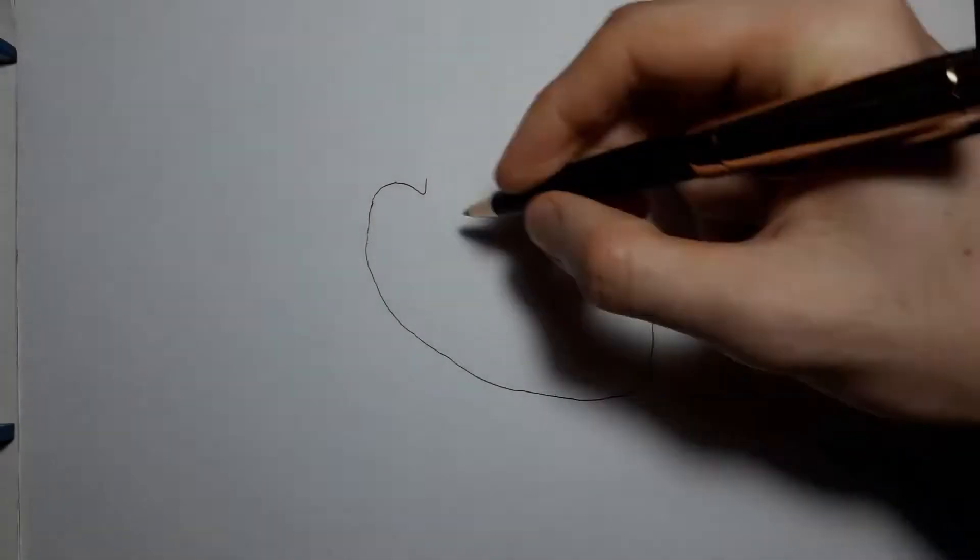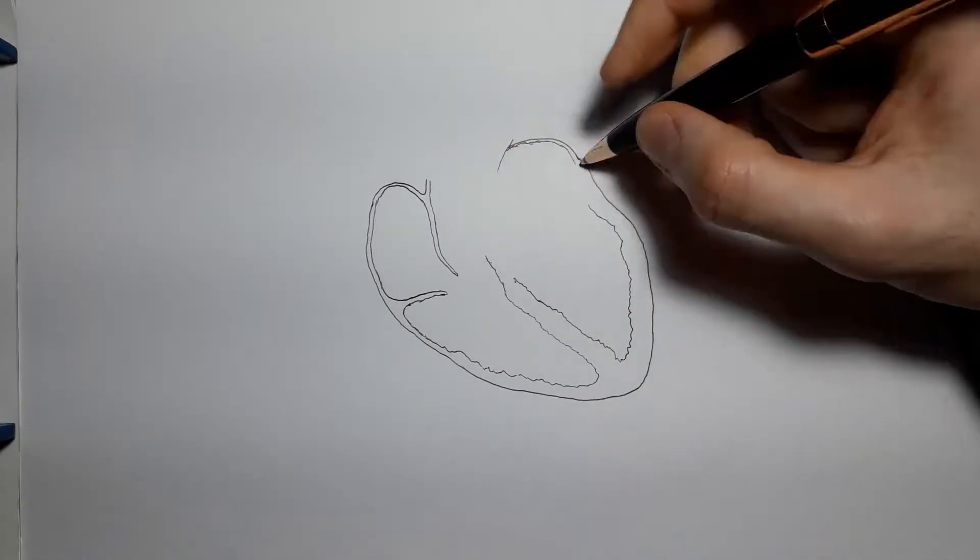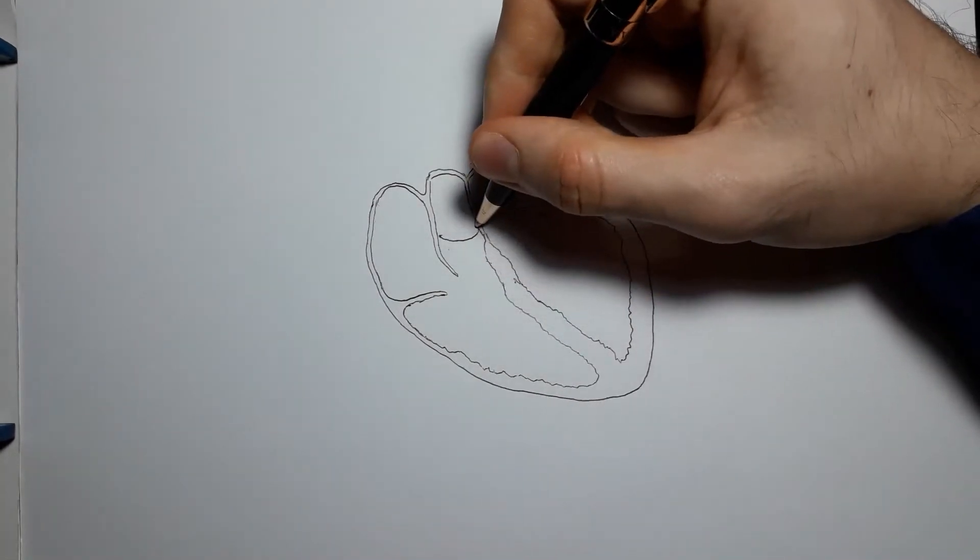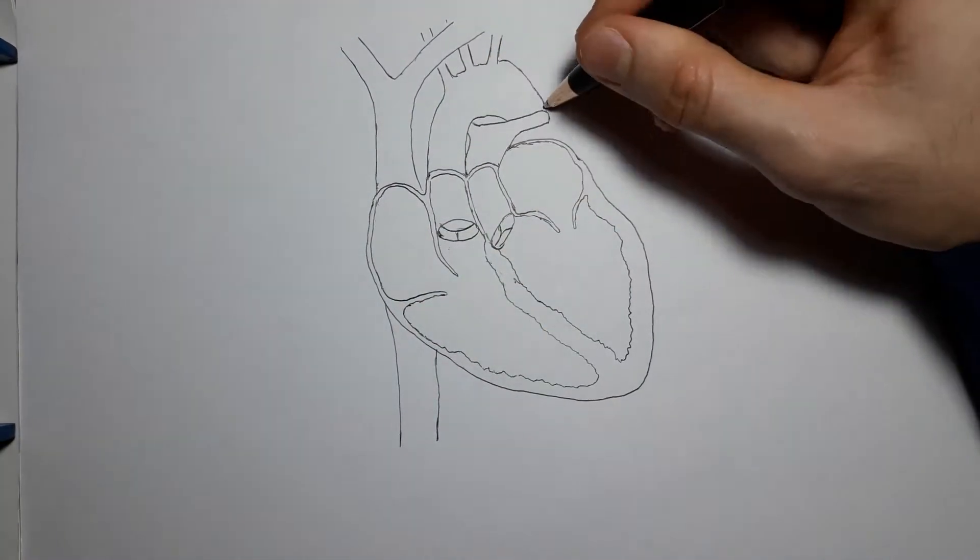This is when you get the transposition of the great vessels, the congenital heart disease resultant from the failure of the aortic pulmonary septum to spiral during its development.